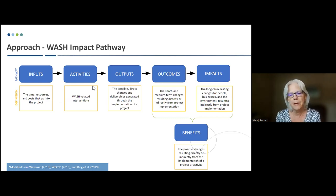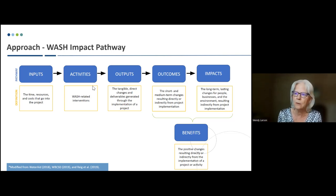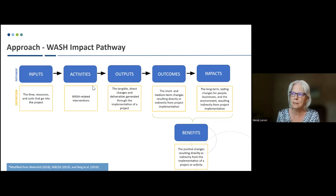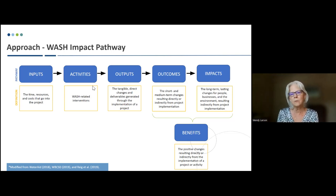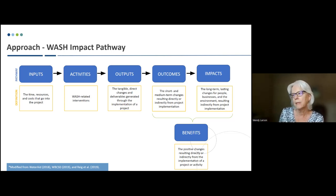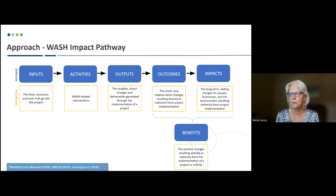We're following the WASH impact pathway, moving from inputs through activities, outputs, outcomes, and impacts. Inputs would be the time, resources, and costs that go into a project, and activities are the WASH-related interventions. Outputs are the tangible direct changes and deliverables generated through implementation, and that's where the volumetric water benefits come in. Outcomes are the short and medium-term changes that result directly or indirectly from implementation, and impacts would be the longer-term lasting changes — the ultimate positive changes that result from the project.